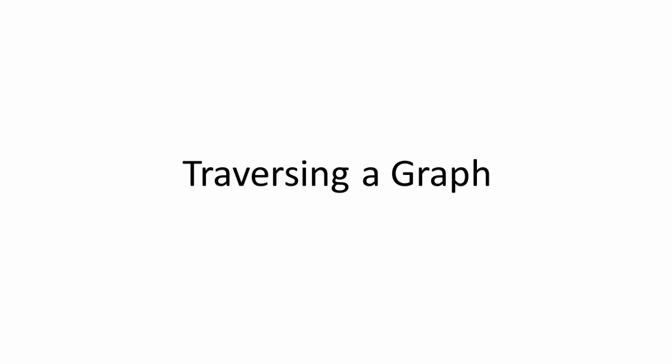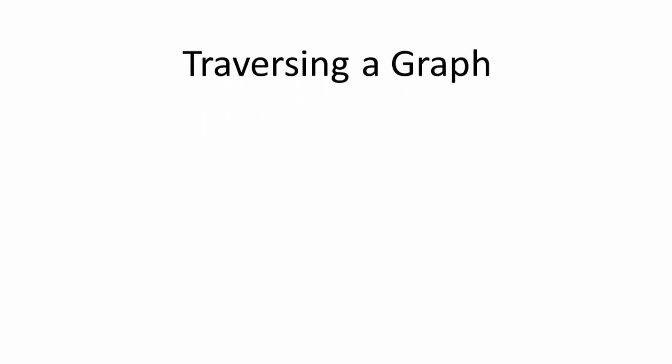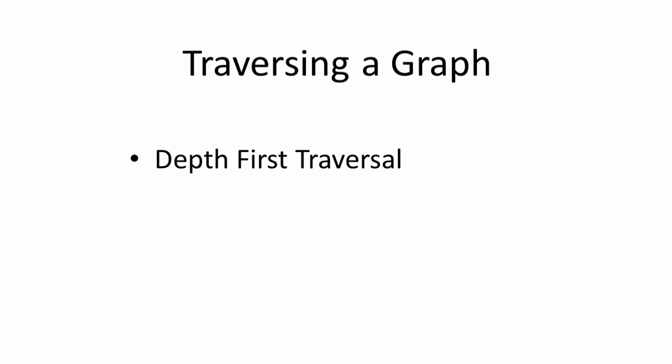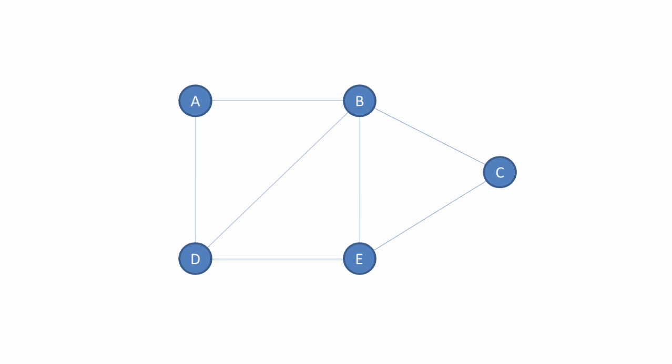Searching a graph involves systematically visiting each and every vertex in the graph. In other words, traversing the graph. There are two ways to do this: depth first and breadth first. Let's see how these apply to our simple graph.